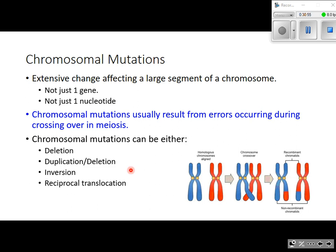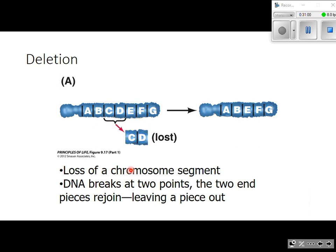There are four different types of chromosomal mutations. The first is a deletion, where DNA breaks so that crossing over can occur, but when it reattaches, a portion of it is lost. In this case, two genes are lost completely — the chromosome should read A, B, C, D, E, F, G, but we're missing genes C and D. An entire piece of that chromosome is missing.